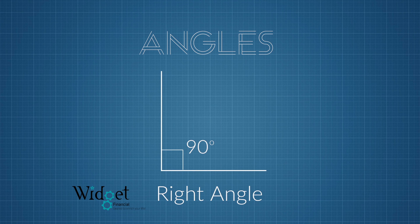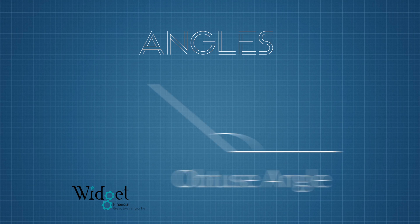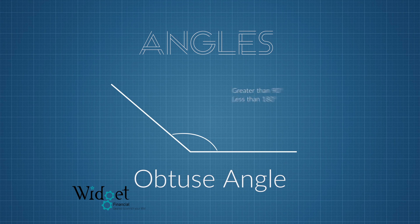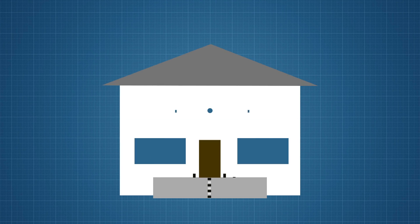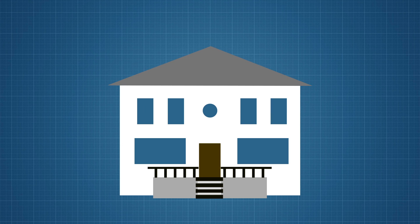And there is an obtuse angle, which is an angle that is greater than 90 degrees but less than 180 degrees. Let's see if we can find each one of these angles in this house. Can you find them all?